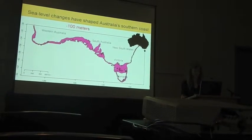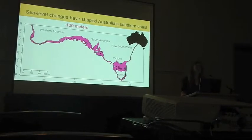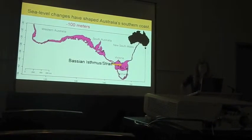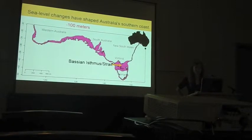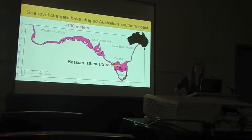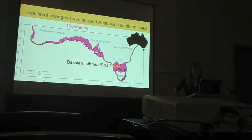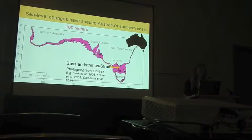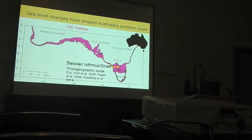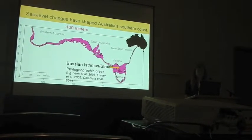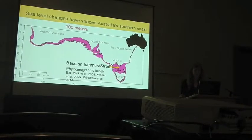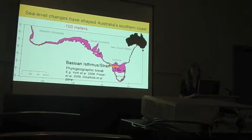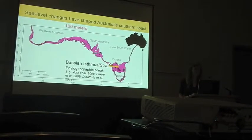Importantly, in the southeastern part of Australia we see that a land bridge emerged. This Bassian Isthmus facilitated dispersal for terrestrial organisms, but for marine organisms it posed a phylogeographic barrier that has been described in a variety of marine taxa, ranging from kelp and barnacles to several fishes. Aside from the Bassian Isthmus, very few phylogeographic studies have considered the entire southern range of Australia.